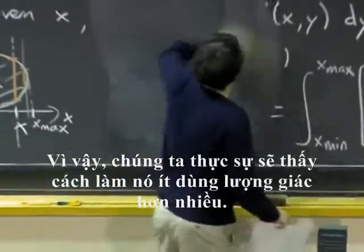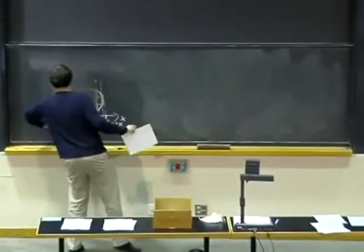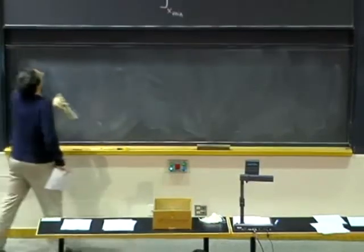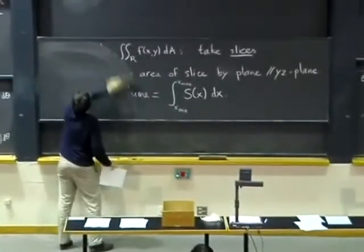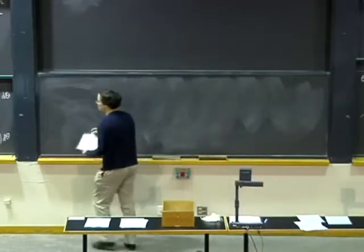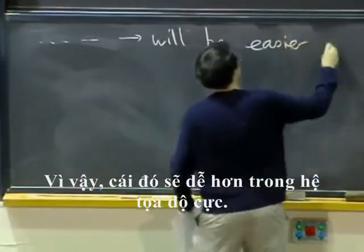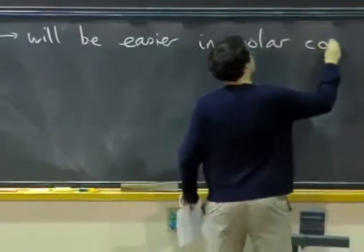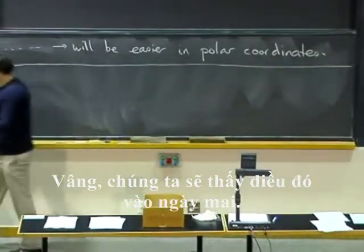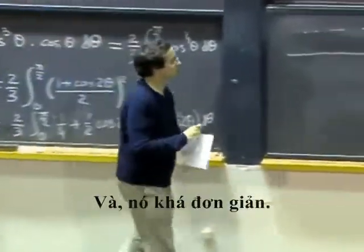So we will actually see how to do it with much less trig. That will be easier in polar coordinates. We will see that tomorrow. But you know, we are almost there. I mean, here you just use the double angle again and then you can get it, and it is pretty straightforward.